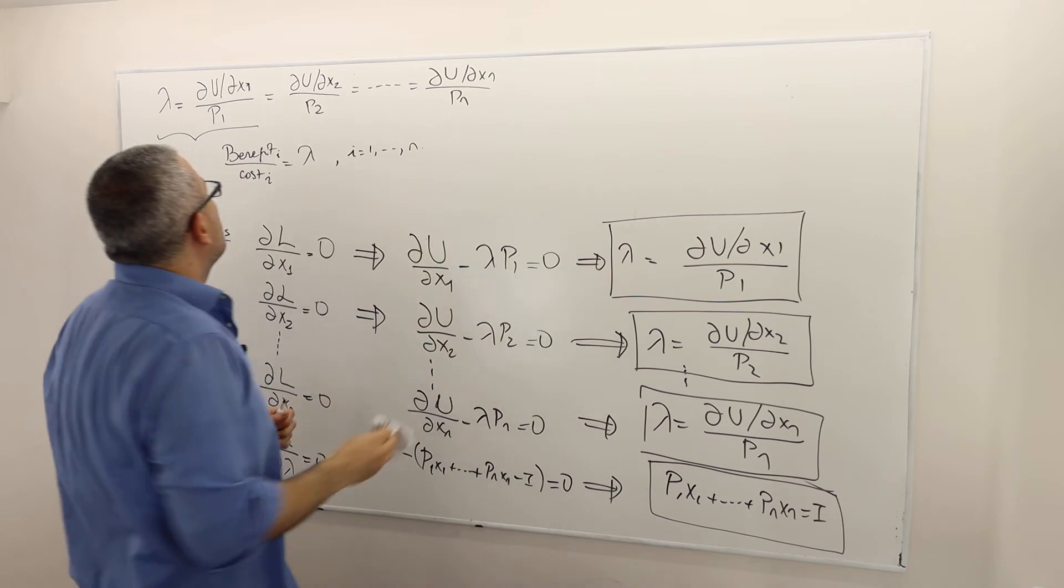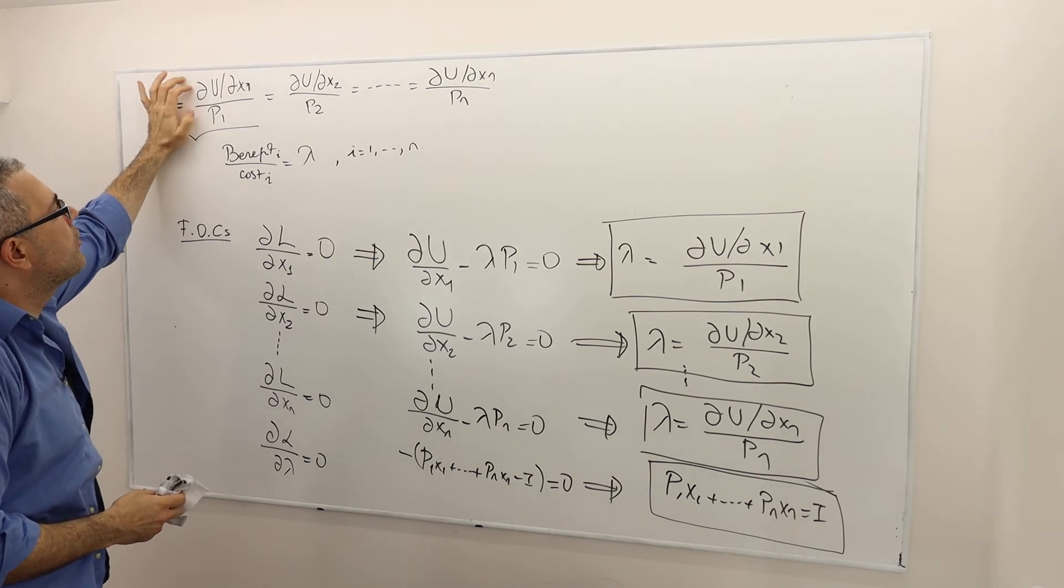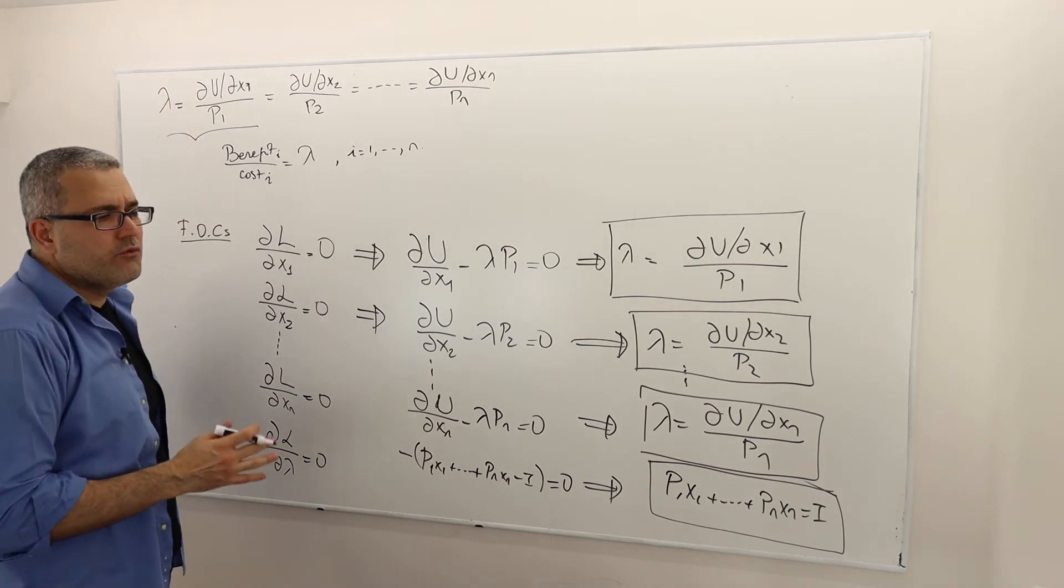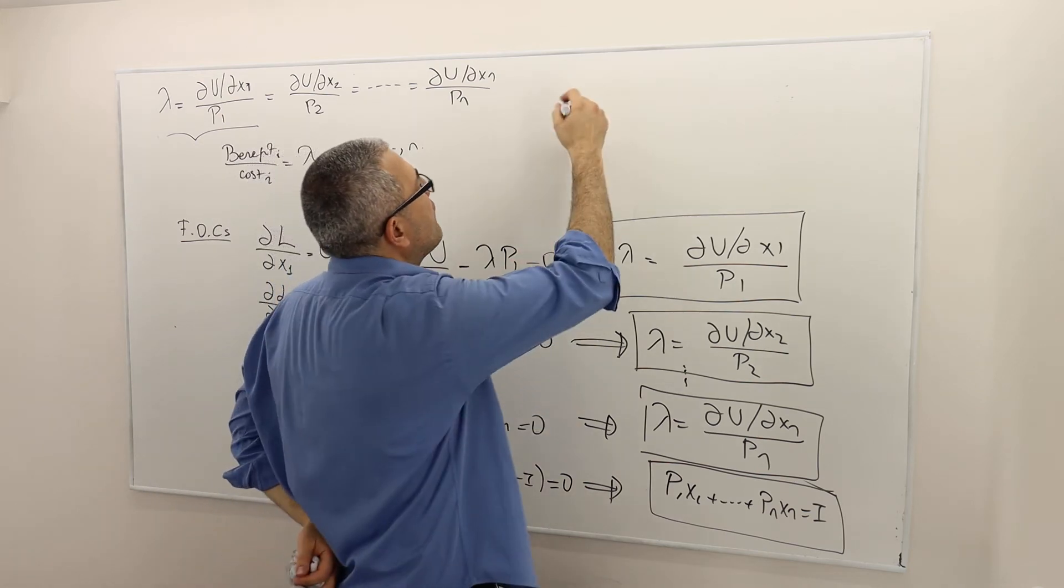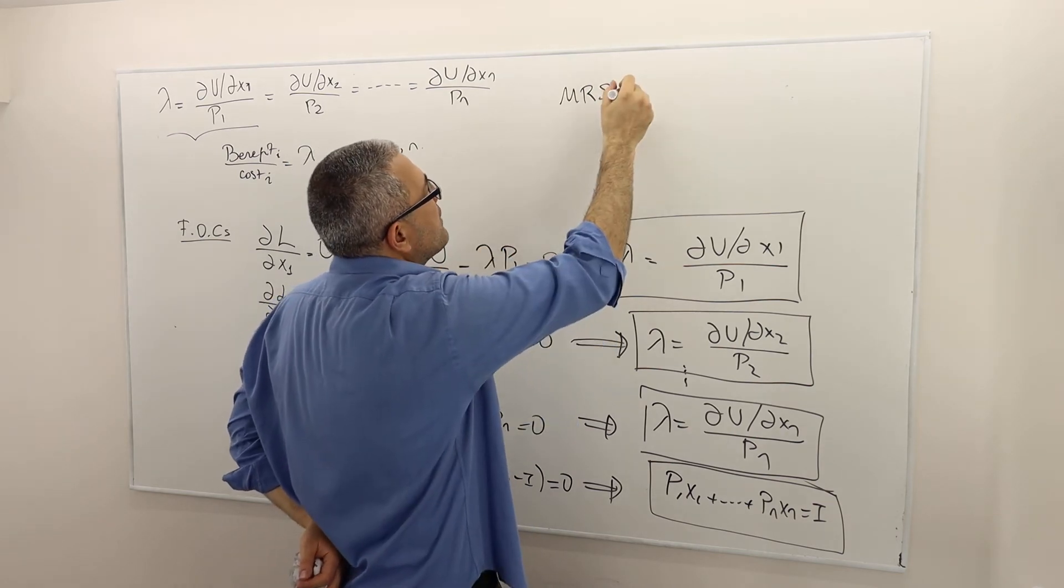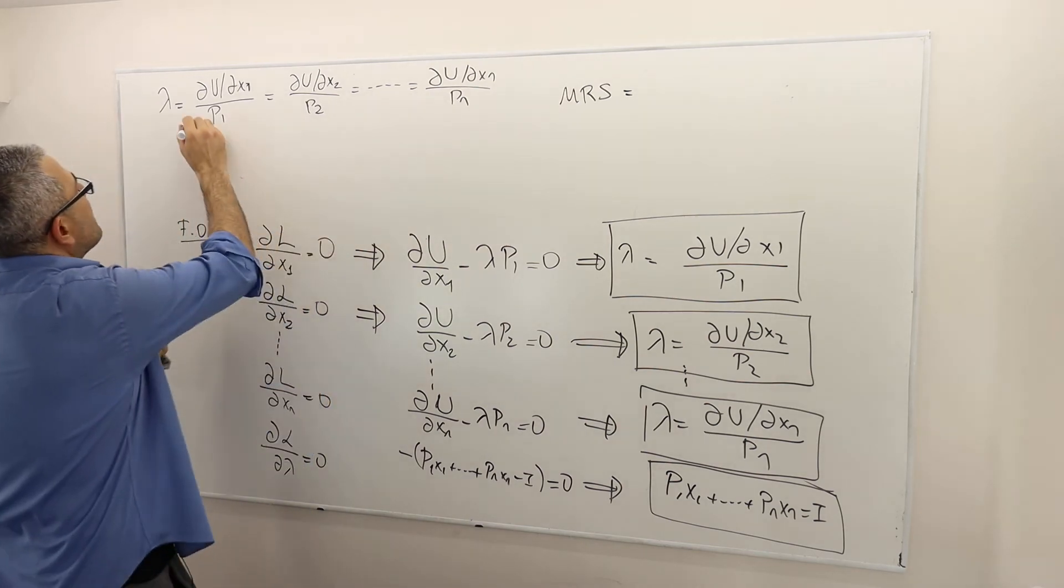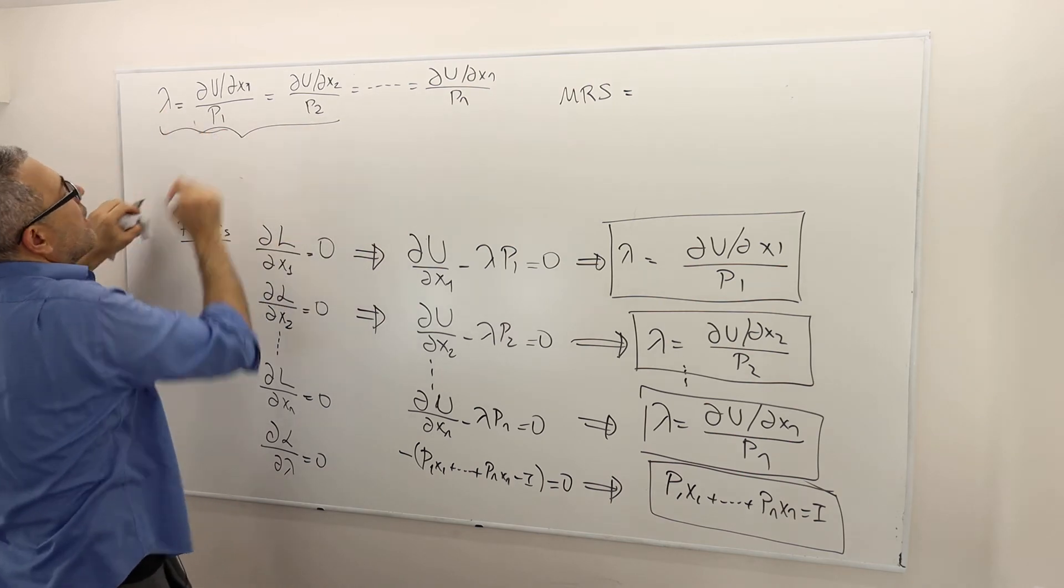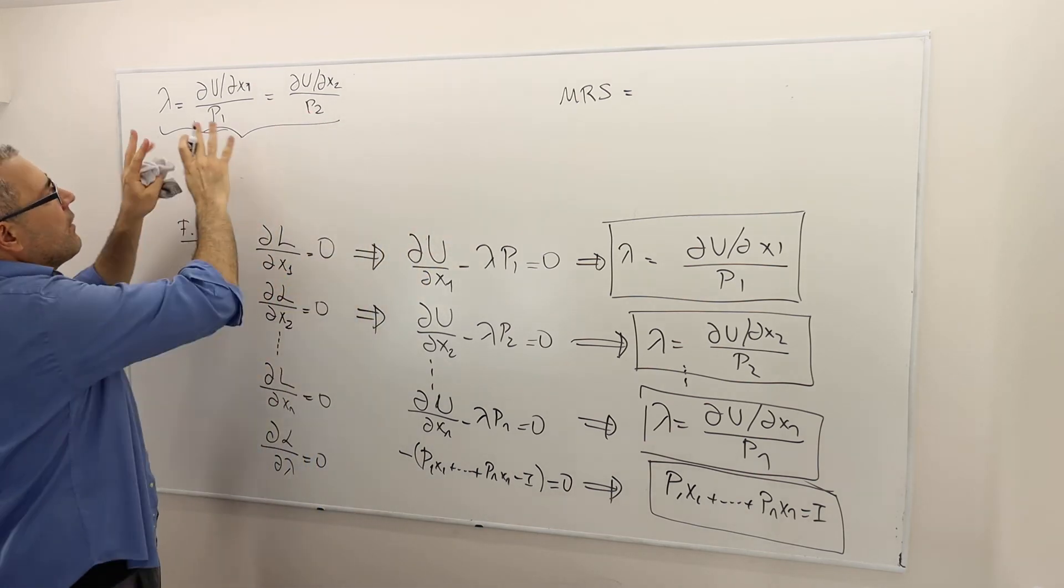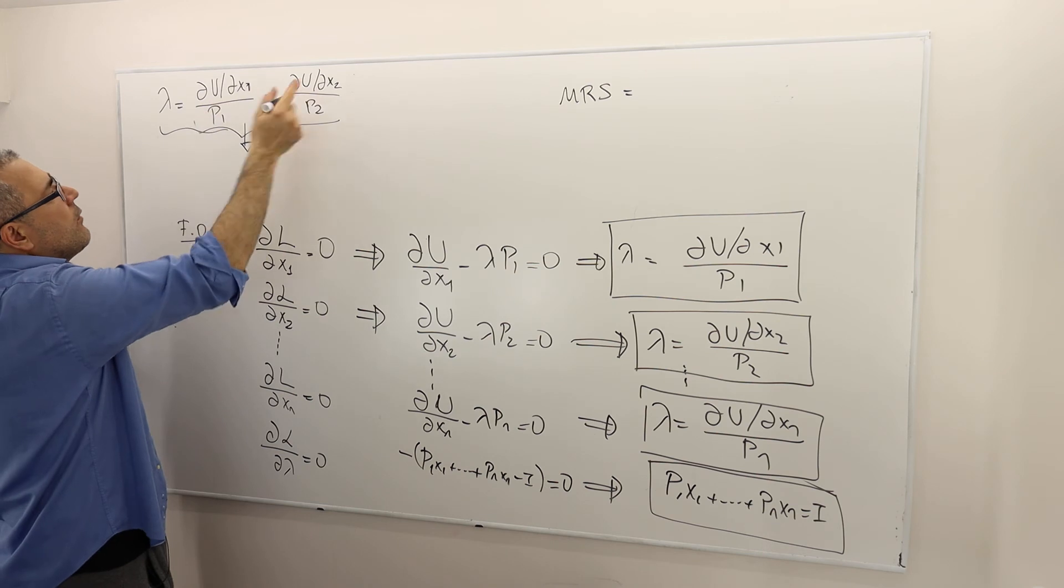So another lesson that we learn is, if you ignore this lambda term, this benefit cost ratio, the marginal benefit marginal cost ratio thing has to be equal across the goods. So if you remember, we have this idea of marginal rate of substitution. What was the marginal rate of substitution? It was, so let's suppose there's only two goods in this economy. So that means only these three inequalities are going to hold. So because there are only two goods for simplification, only this equation has to hold. But what does that mean? So if you look at this term, well, del u del x2,